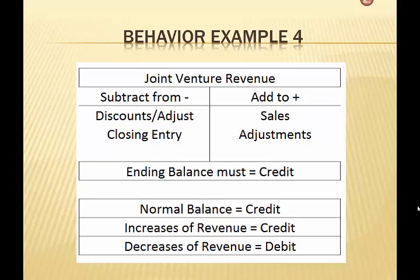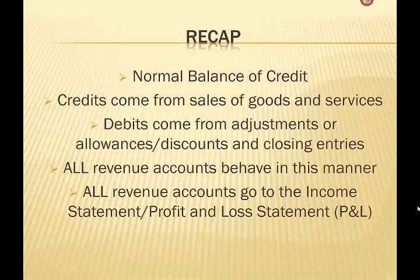Finally, here's just another example of the different kinds of revenue accounts we can have. A lot of companies will have not only product sales, but maybe they also merchandise or allow people to license their product and sell it in their stores. There are all kinds of different revenue arrangements that can happen. And again, this works exactly the same as the others. So as a recap: our normal balance in any revenue account is going to be a credit. Credits come from the sale of goods and/or services. Debits come from adjustments, allowances, discounts, and closing entries. All revenue accounts behave in the same manner.